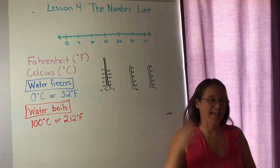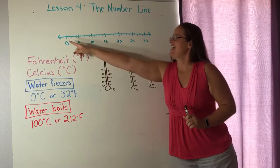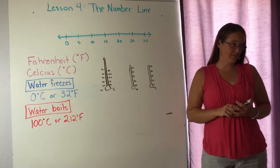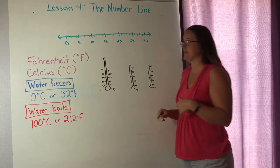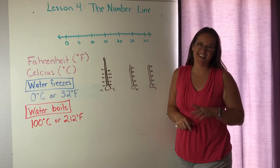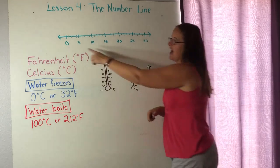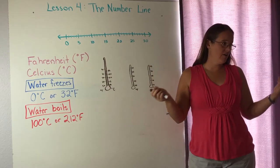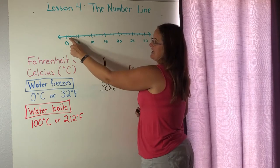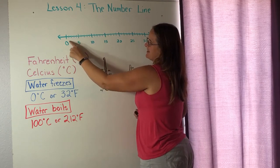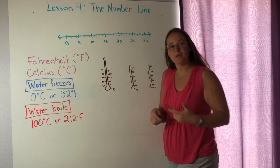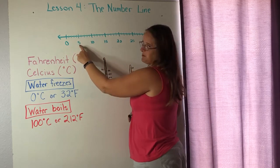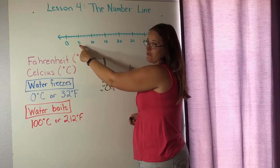So to start today, the number line. I have a number line up here on the board. Now there's a few things I want you to notice about the number line. One of my students just said it counts by fives. Sort of. I only labeled the fives but a number line counts all the numbers in order. I just didn't label them because I would run out of space. A lot of books do that as well. When you're reading a number line they will only label maybe every two, maybe every five or ten or twenty even.